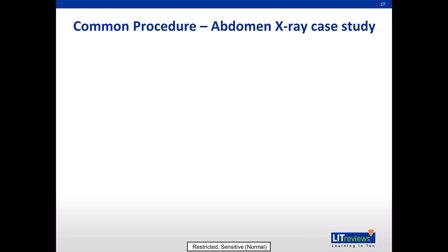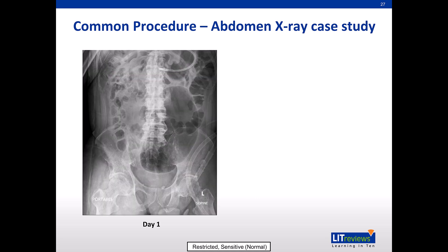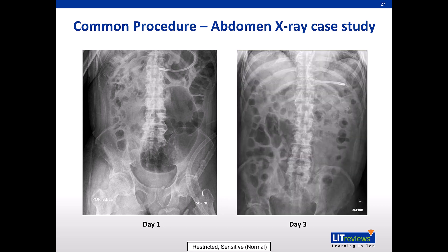Another commonly requested procedure is abdomen x-ray. In this case study, a patient was admitted to a high dependency unit and presented with severe abdominal pain after abdominal surgery. The patient had an urgent mobile abdomen x-ray done and was subsequently diagnosed with sigmoid volvulus. With the condition detected early, the patient went for surgery and another mobile abdomen x-ray was performed. The sigmoid volvulus was resolved, suggesting that mobile radiography has clearly benefited the patient.